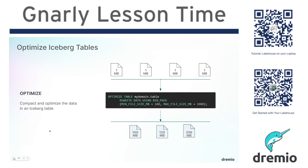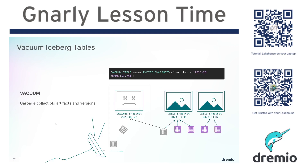Dremio also assists you with lakehouse management — not just letting you create, read, and write Iceberg tables, but helping you manage them. Part of that management is compaction, being able to optimize the size of your data files using the OPTIMIZE command. And if you're using Dremio's integrated catalog, you can automate that. Same thing with VACUUM — a command that lets you take any Iceberg table and expire snapshots beyond a certain age, cleaning up files that are no longer valid to manage your storage footprint. That can also be automated when using Dremio's integrated Iceberg catalog, which is based on Nessie.